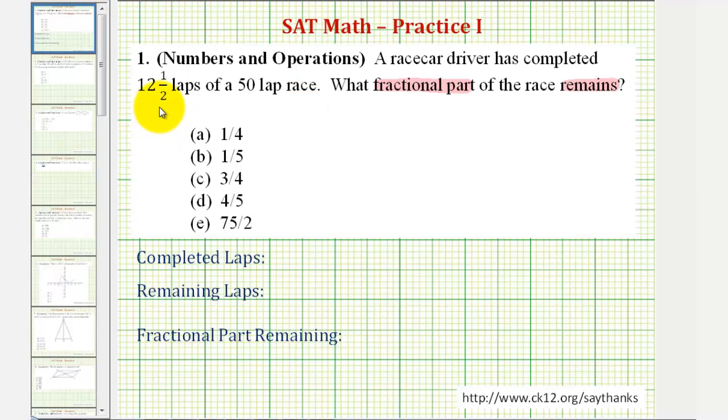So the driver has completed 12 and a half laps, which might be helpful if we write as 12.5 instead. And because there's a total of 50 laps in the race, the laps remaining to drive would have to be the total 50 minus 12.5, which is equal to 37.5.